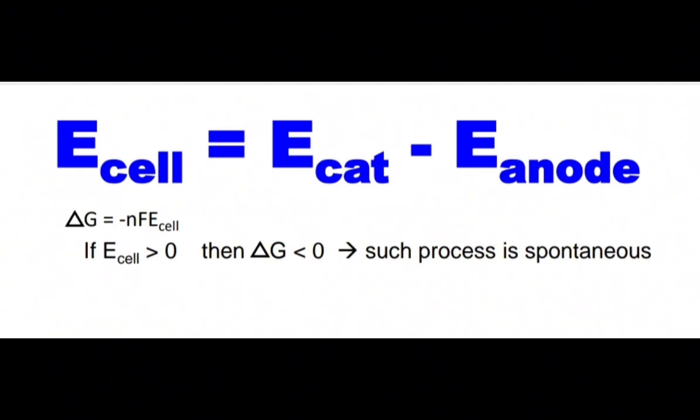So if potential of cathode is bigger than potential of anode, potential of the cell will be positive, which means ΔG will be negative. Such a process will be spontaneous.